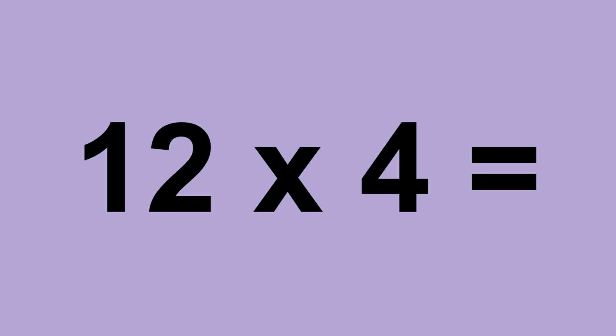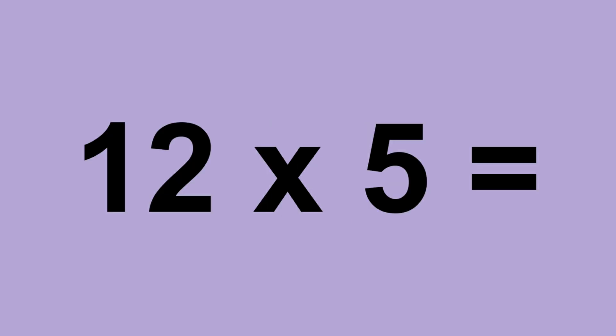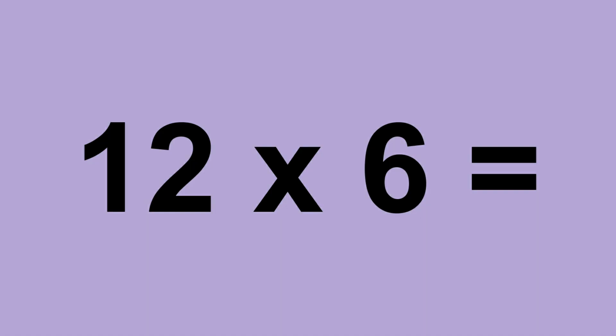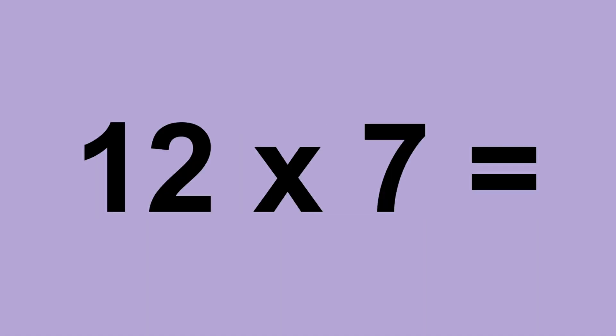Twelve times four equals forty-eight. Twelve times five equals sixty. Twelve times six equals seventy-two. Twelve times seven equals eighty-four.